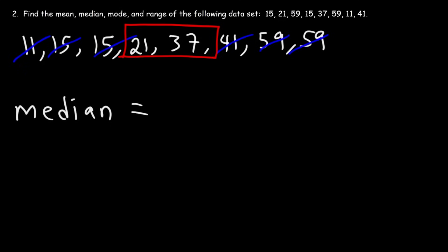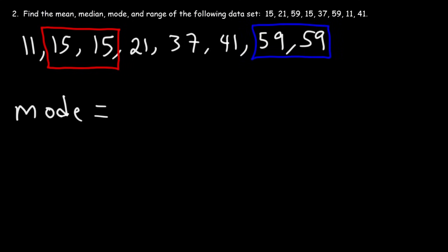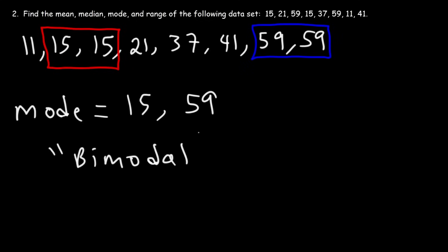Now what about the mode? The mode is the most frequent number in the data set. This problem is different from the last one because we have two numbers that appear twice: 15 and 59. It turns out they both represent the mode, so the mode is 15 and 59. What we have is something known as a bimodal data set because there are two modes instead of one.